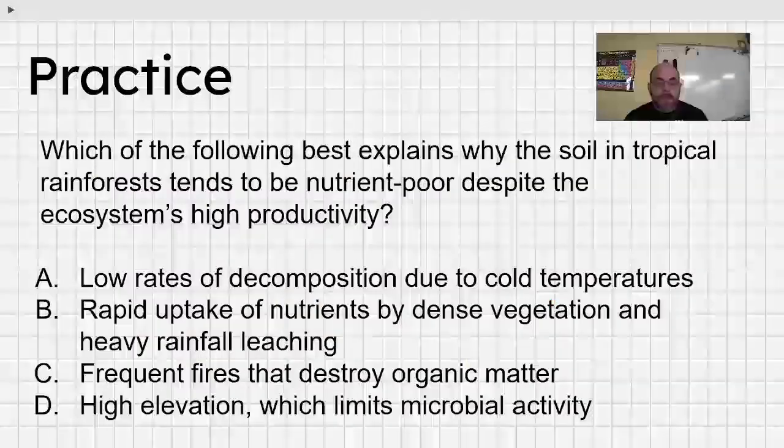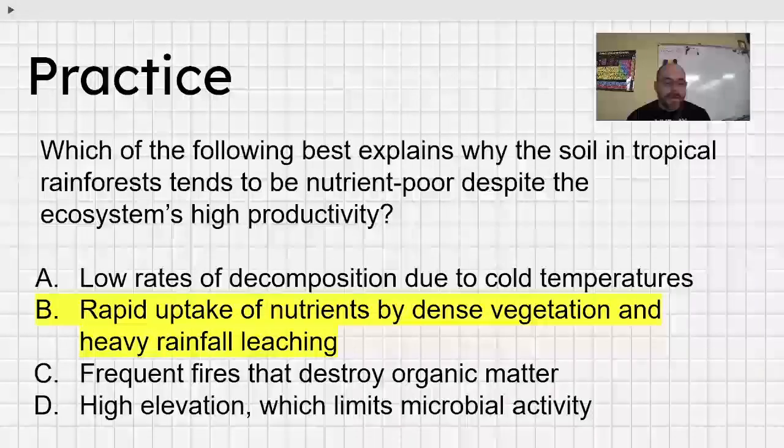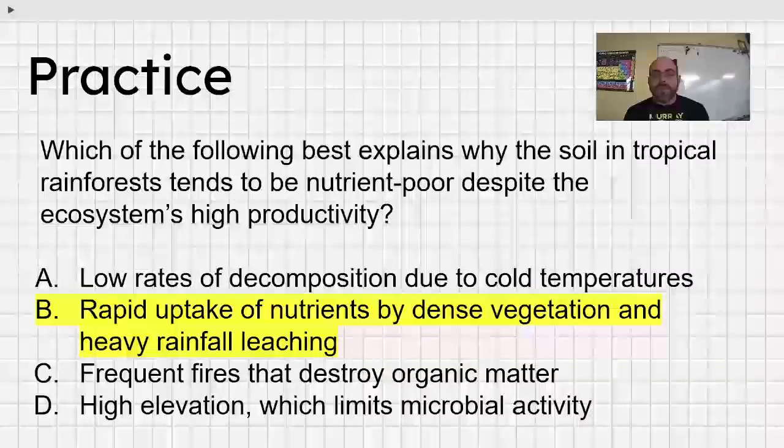So let's look at the practice question. Which of the following best explains why the soil in tropical rainforest tends to be nutrient poor despite the ecosystem's high productivity? Take a minute, pause the video, see what you got. And let's look. Rapid uptake of nutrients by dense vegetation, heavy rainfall, leaching. We didn't talk about leaching. Leaching is the idea that the nutrients are basically being sucked through the soil as opposed to being brought up by the organism itself. And so that can also cause an issue. Low rates of decomposition due to cold temperatures. It's not cold at the rainforest. Frequent fires. It's not happening either. Because it's raining all the time, high elevation, not necessarily. B is the best answer. Hopefully this practice helped. We are moving on to 1.3.